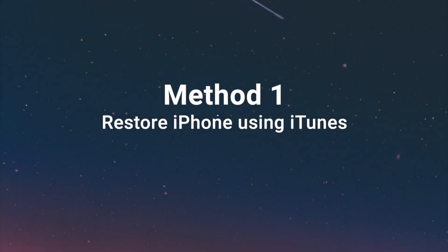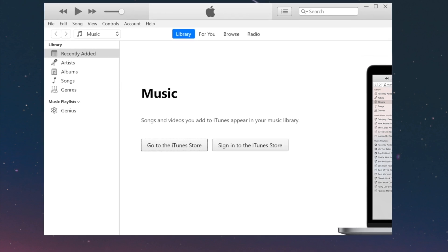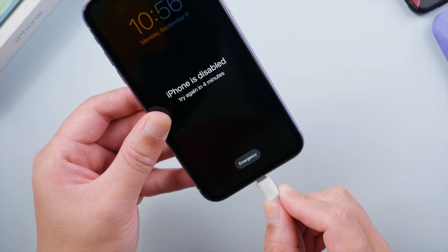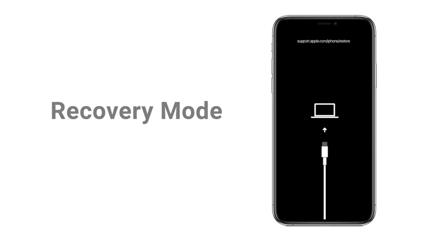First, you can restore the phone to factory settings in recovery mode using iTunes. Make sure you have iTunes installed on your computer, then plug your phone in. In order for iTunes to recognize it, let's put it into recovery mode.